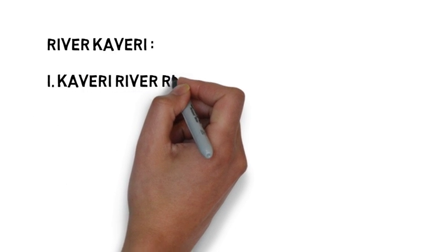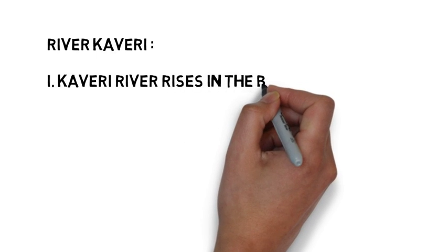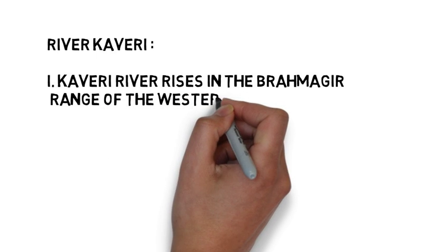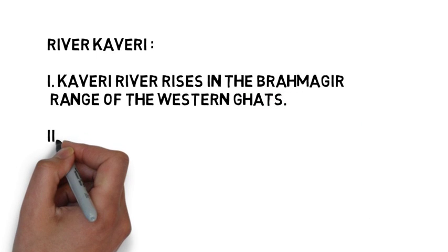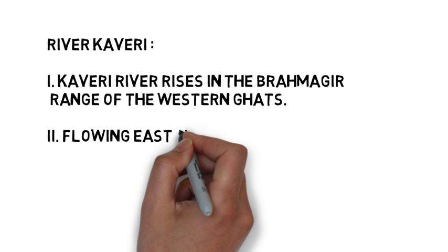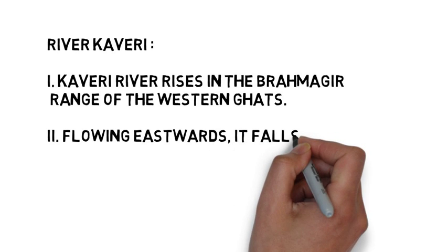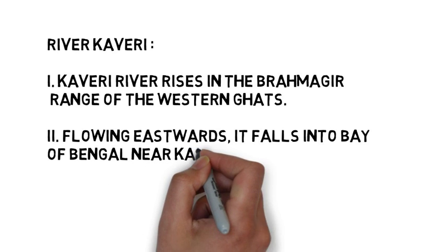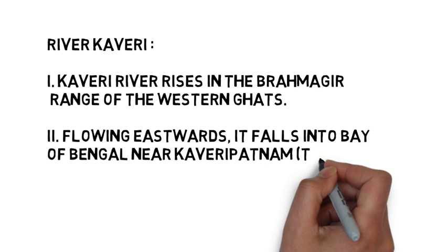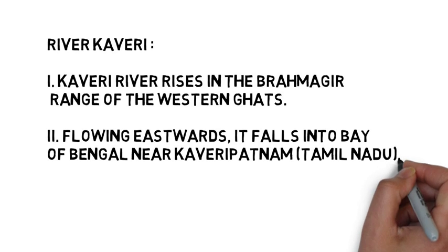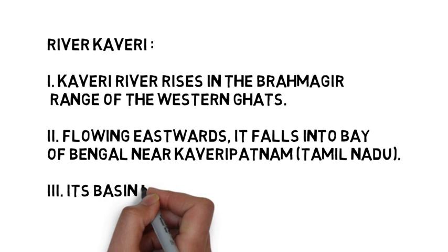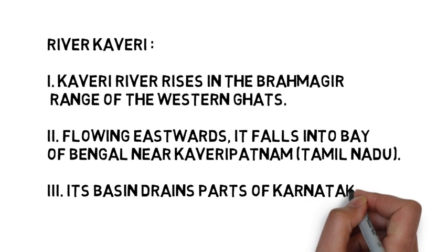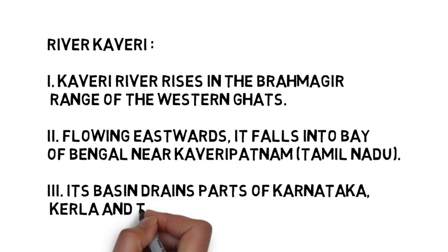Another important river is the river Kaveri. The Kaveri rises in the Brahmagiri range of the Western Ghats in Karnataka. Flowing eastward, it falls into the Bay of Bengal near Kaveripatnam in Tamil Nadu, draining parts of Karnataka, Kerala, and Tamil Nadu. On its way to the sea, the rivers Kabini, Bhavani, and Amravati join it as major tributaries. One important fact: since the upper catchment receives rainfall during the southwest monsoon and the lower part during the northeast monsoon, the river carries water throughout the year with comparatively less fluctuation. About 3% of the Kaveri basin falls in Kerala, 41% in Karnataka, and 56% in Tamil Nadu.